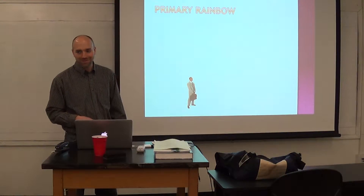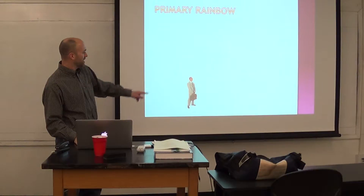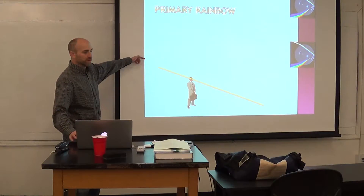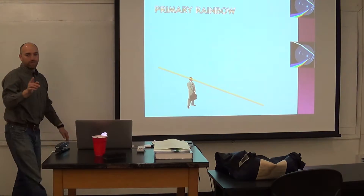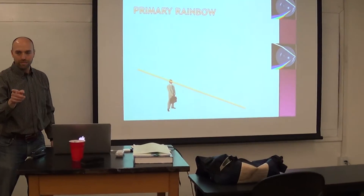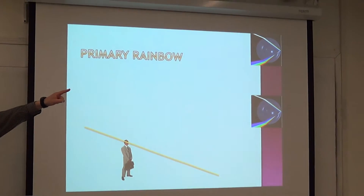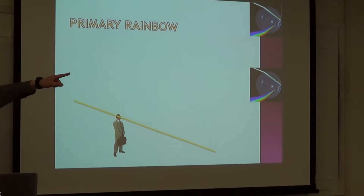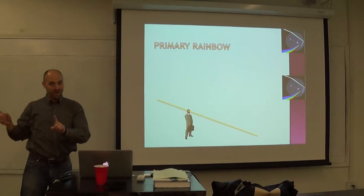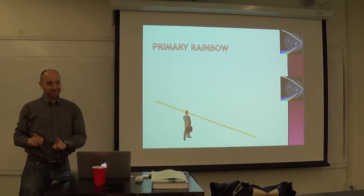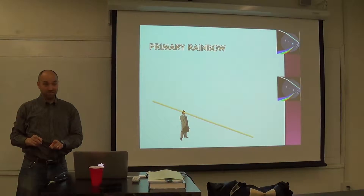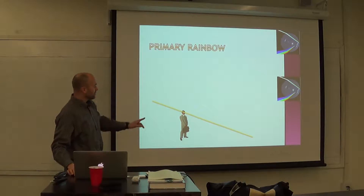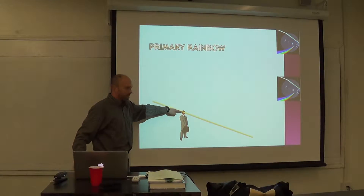We're talking about rainbows. If you're standing there and you happen to see a raindrop - a pair of raindrops - the sun is way back behind you. You will never see a rainbow with the sun in front of you. Whenever you see a rainbow over there, the sun will be behind you. They will never be in the same location.